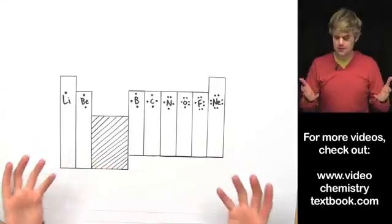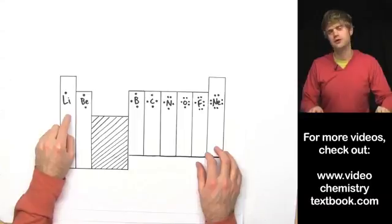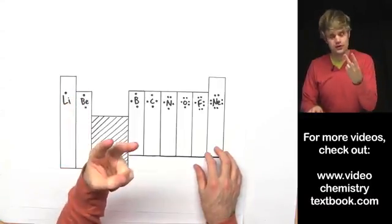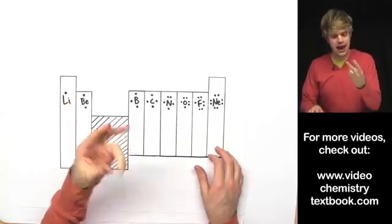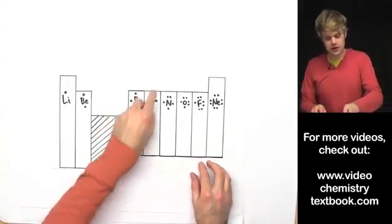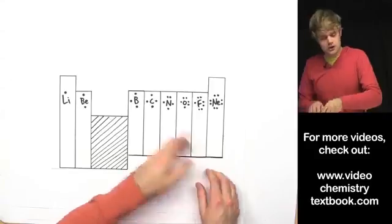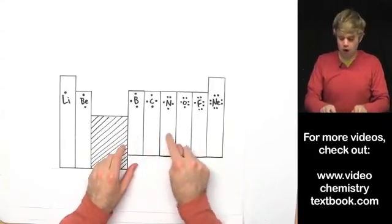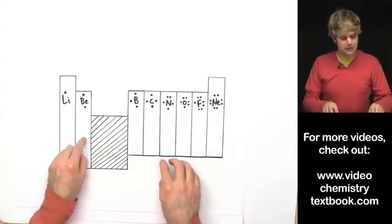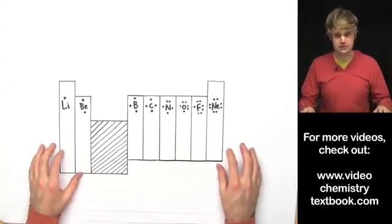So here's a summary: every atom in the first column has one valence electron, every atom in the second column has two. Skipping the middle section, we get three, four, five, six, seven, and eight valence electrons going across the remaining columns. If you know which column a particular atom is in, you can figure out how many valence electrons it has.